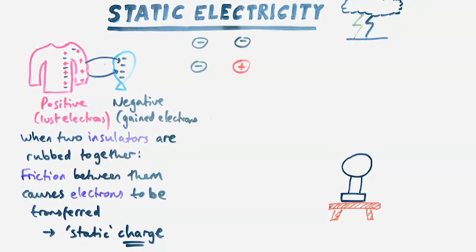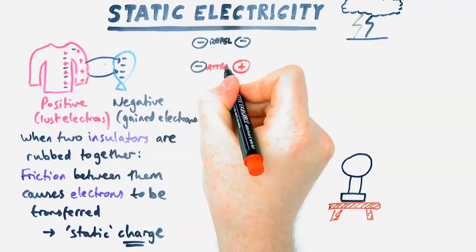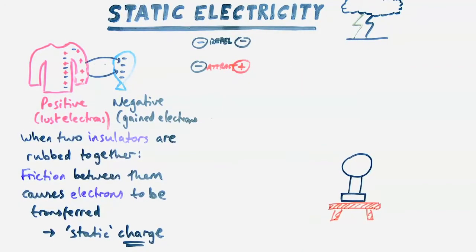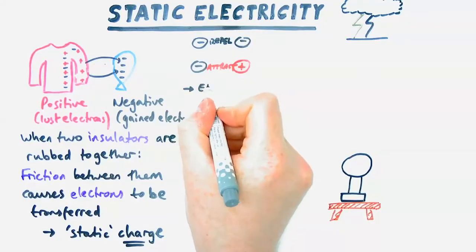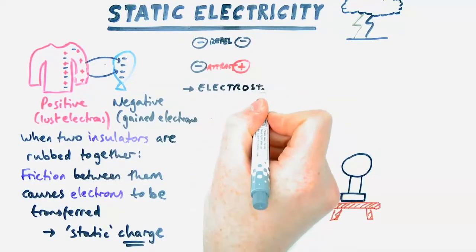Now, the consequence of this means that it can either attract or repel. So if a balloon meets another negatively charged object, it will repel because two like charges repel. And if it meets a positively charged object, it attracts because positives and negatives attract.